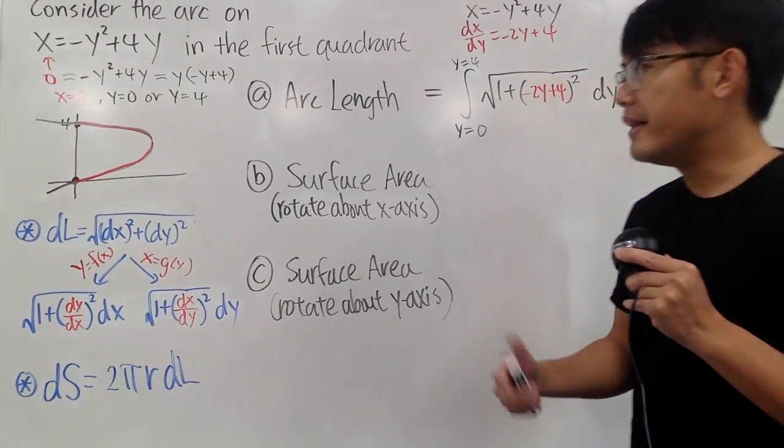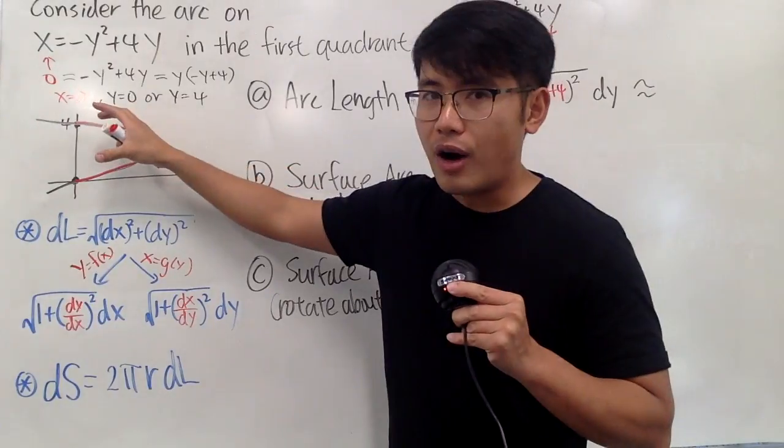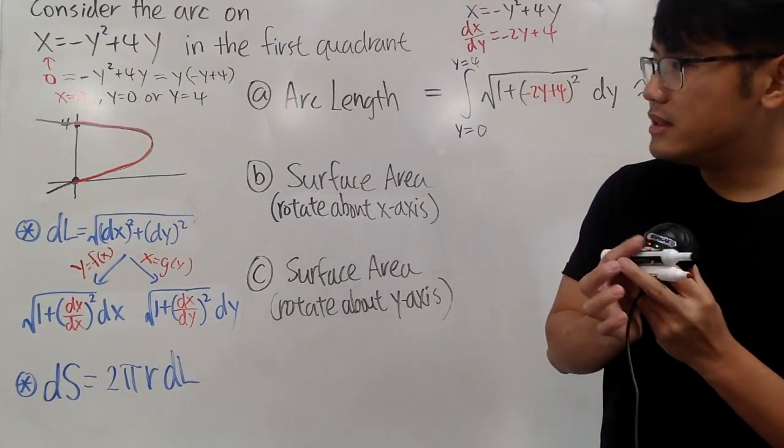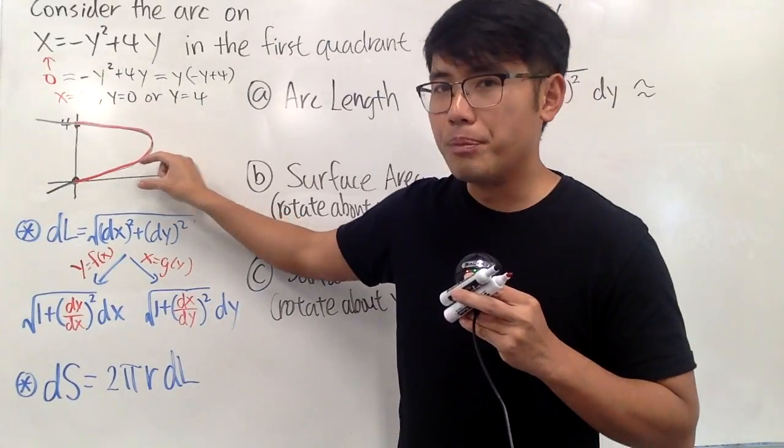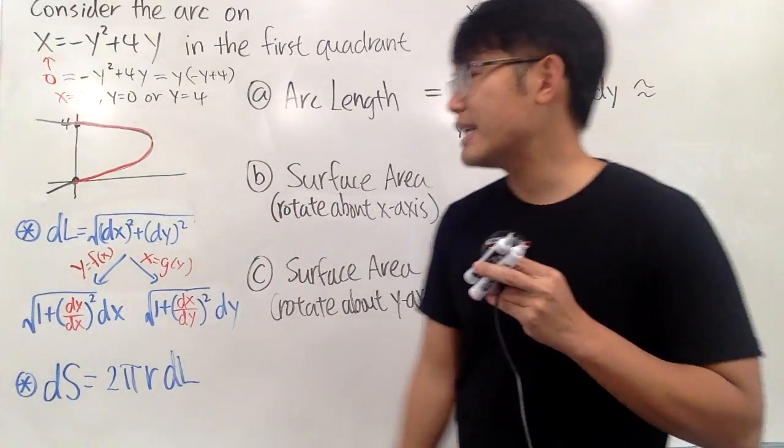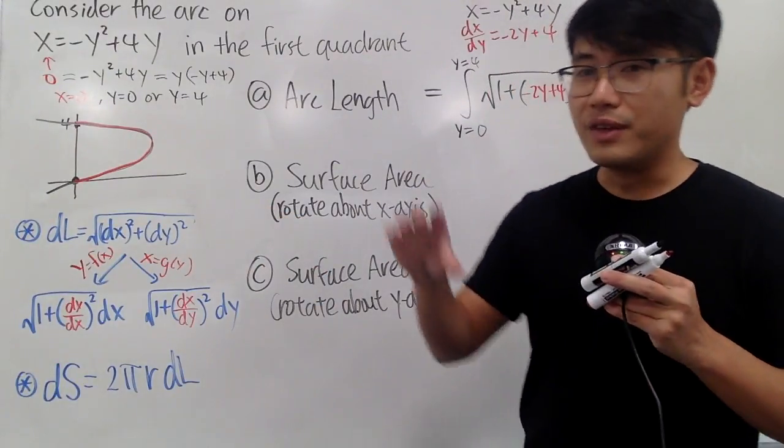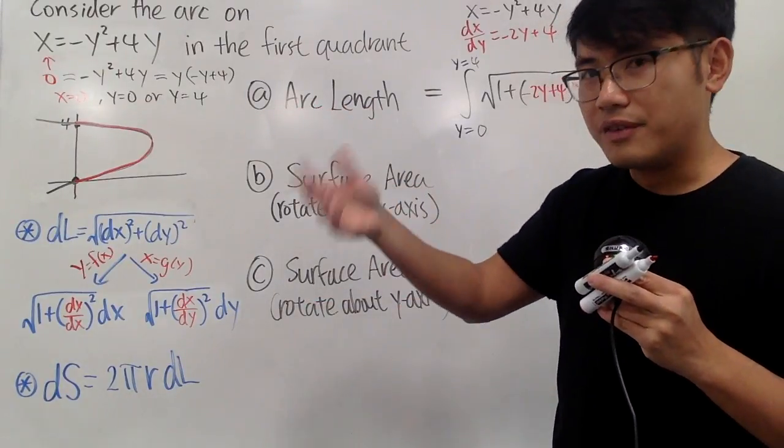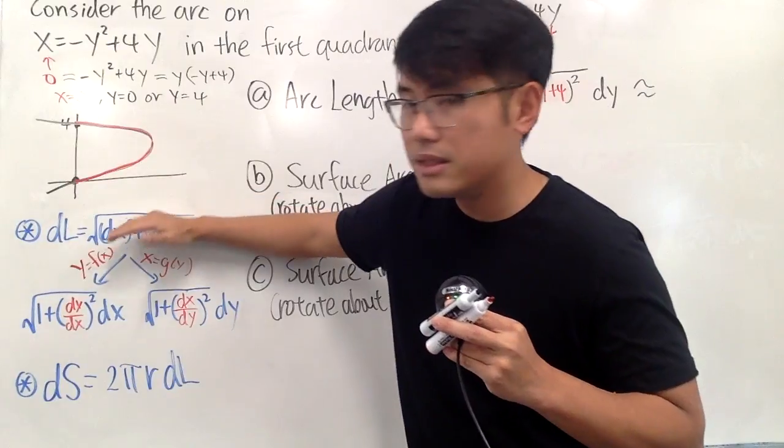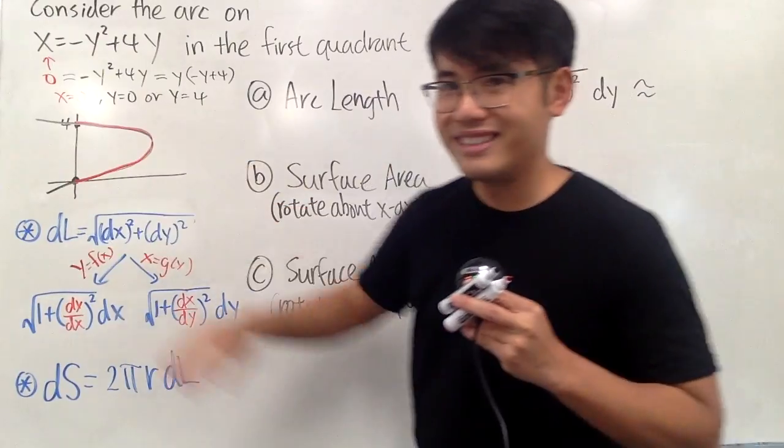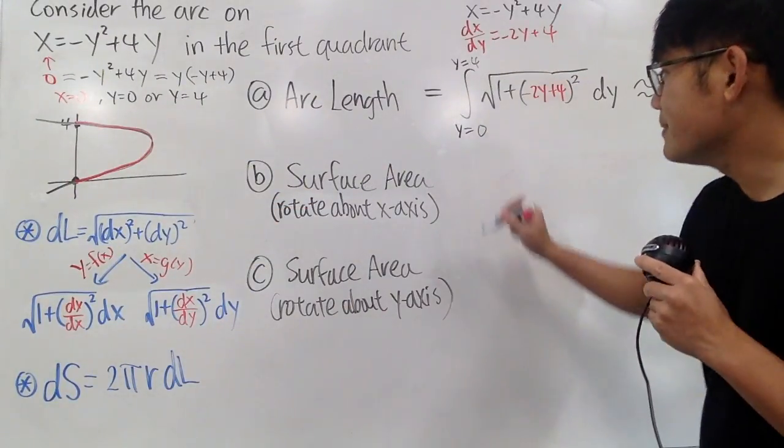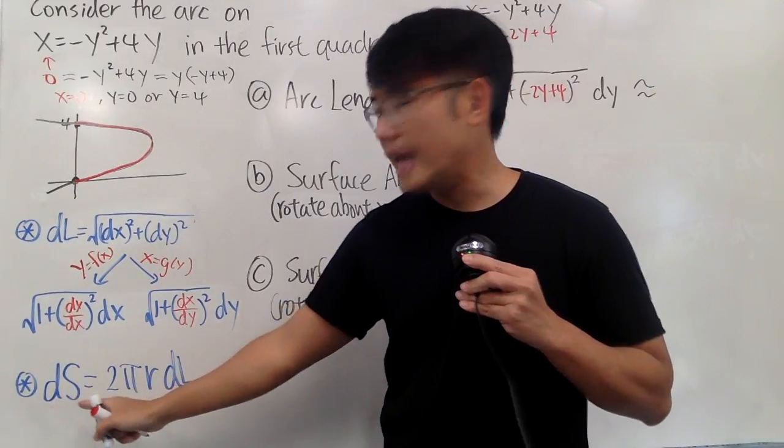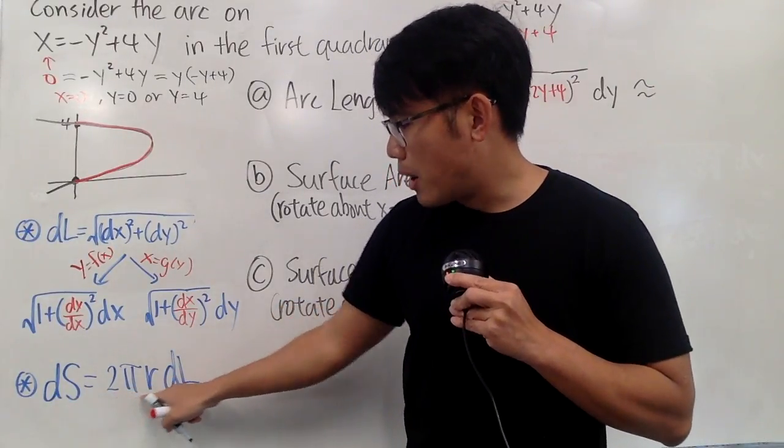we will talk about the surface area, and now here's the deal. We will take this arc, and rotate about the x-axis, and yes, you will see that there's like one little part is missing, but the deal is that we look for the surface area, so it's like this, this kind of shape. And then the surface area, you have the outer part, and then you also have the inner part, right? But anyway, for the surface area, first we have to look at the ds. Formula is 2 pi r times dl. r is the radius.